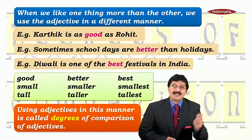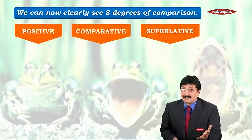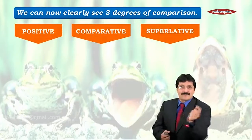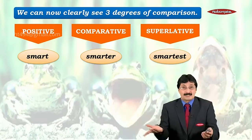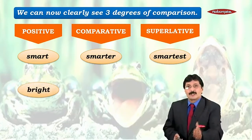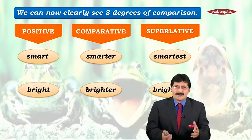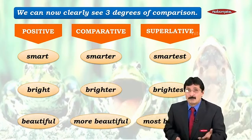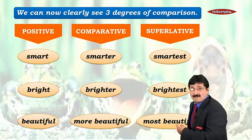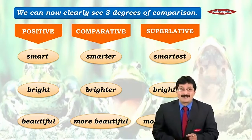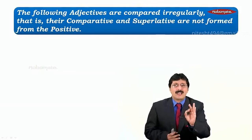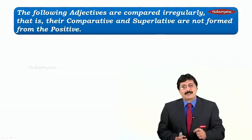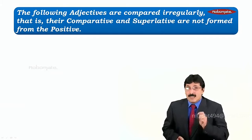Using adjectives in this manner is called degrees of comparison of adjectives. It becomes very clear that there are three degrees: positive, comparative, and superlative. For example: smart, smarter, smartest — positive, comparative, superlative. Bright, brighter, brightest — positive, comparative, superlative. Beautiful, more beautiful, most beautiful — positive, comparative, superlative. Generally we form the comparative with ER or more, and the superlative with EST or most.